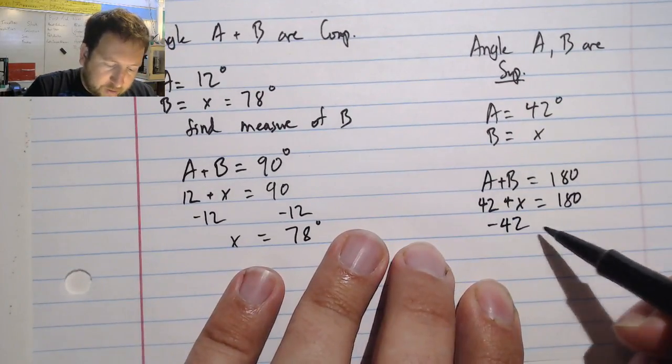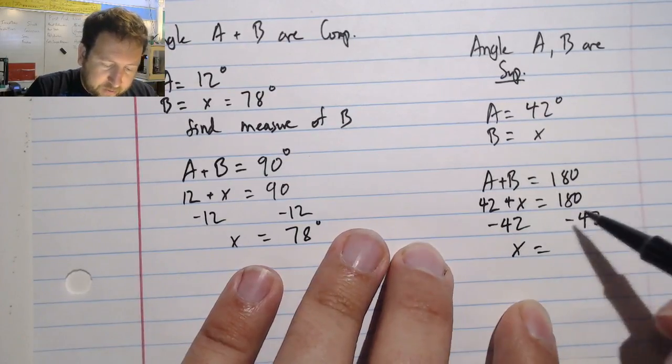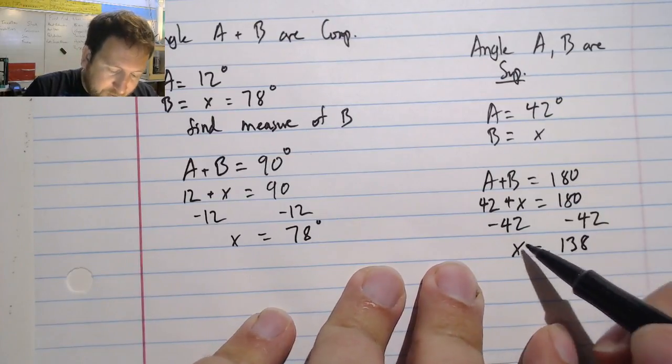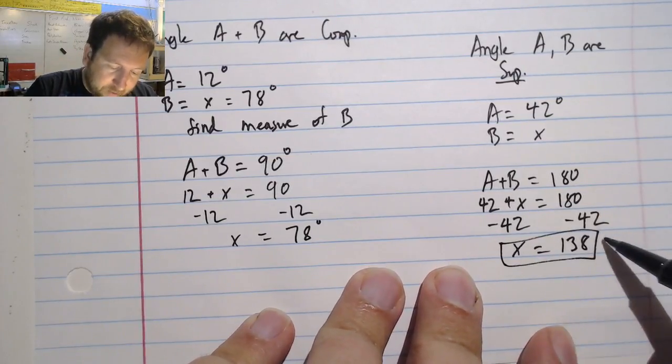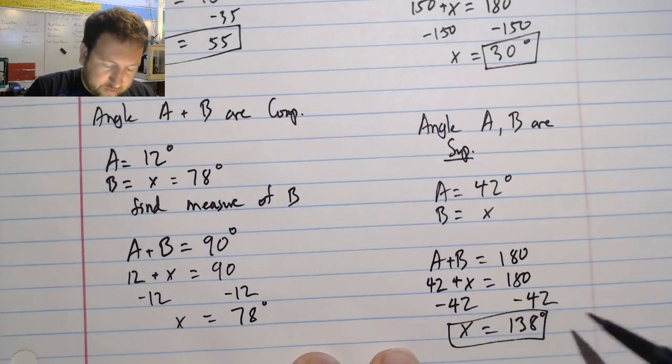I'm going to subtract 42 from both sides. I have x equals. And 180 minus 42 is 138. So that is my answer. My angle, my other angle is 138 degrees.